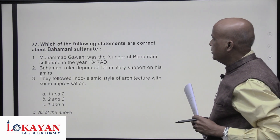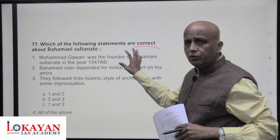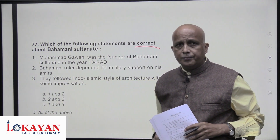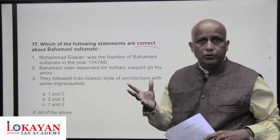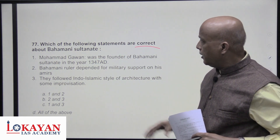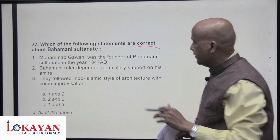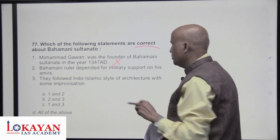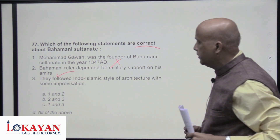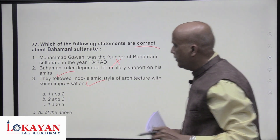Which statements are correct about the Bahmani sultanate? Muhammad Gawan was not the founder — Alauddin Hasan Bahmanshah (also known as Hassan Gangu) is the founder. Gawan was one of the great prime ministers of the empire. The Bahmani sultanate depended on military support from its amirs — this is largely incorrect as they were semi-independent. They followed the Indo-Islamic style of architecture with some improvisation — correct. Statements two and three are correct.